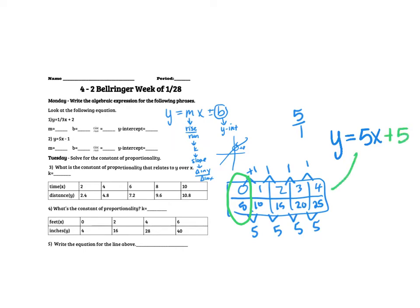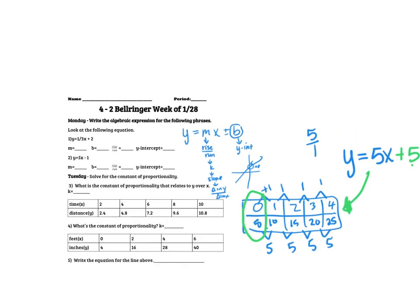So the equation for this chart would be 5X plus 5, because the change in Y over the change in X is 5, and then the Y-intercept is 5. So that should help you get through that.